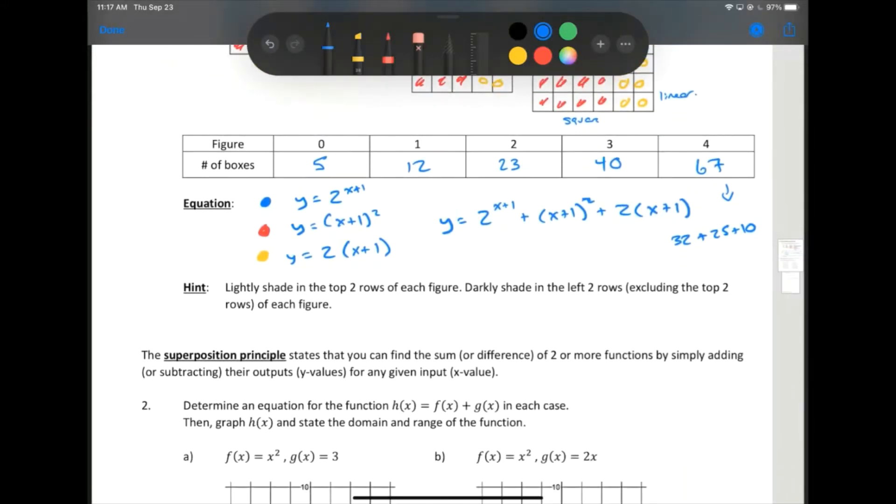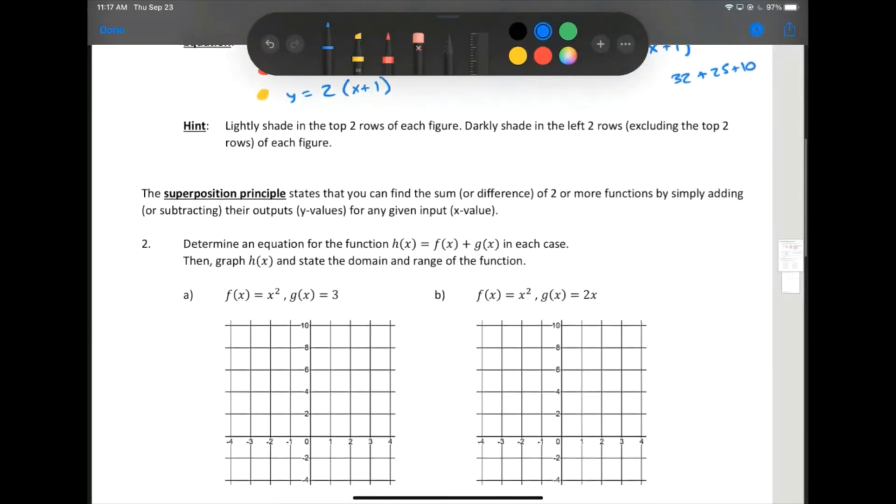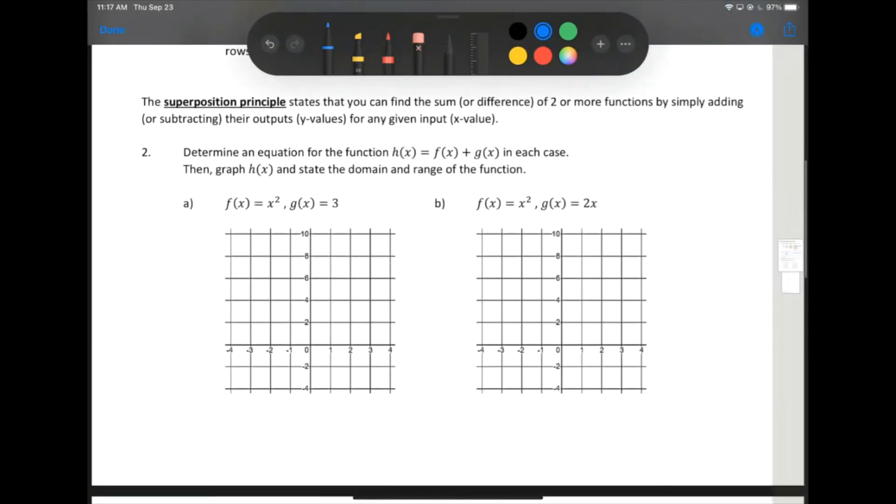This is actually called something - it's called the superposition principle. You may have heard of that, especially if you took physics and talked about waves at all. Superposition principle just says that if you've got two separate things and you put them together, it's literally just add them together and the results are the sum of the two things. And we can actually do this with graphs as well.